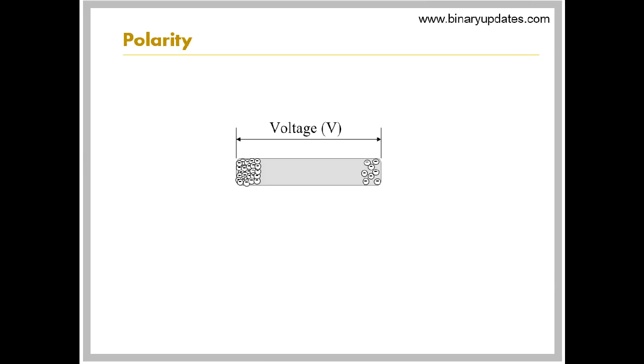The voltage means difference in potential between two points. If one point has more electrons than other, then it has negative polarity, and other point has positive polarity. If these two points are connected by a conducting wire, then electron starts flowing from negative to positive polarity. This flow of charge results in electric current.